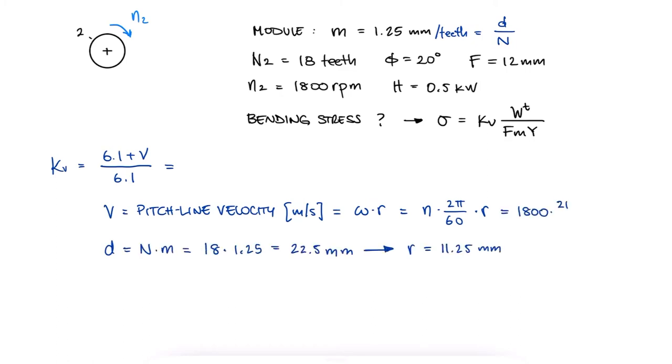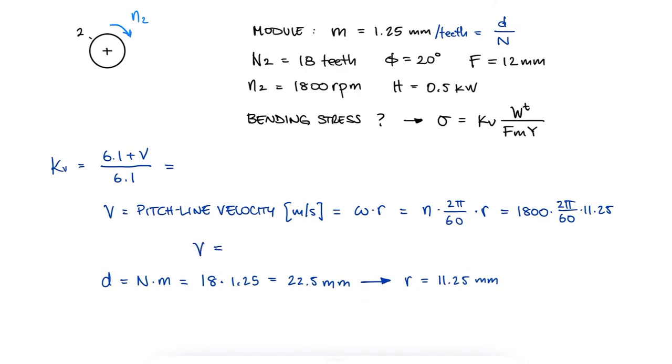With the radius and the RPM value, we find the pitch line velocity in millimeters per second, which divided by 1000 gives us the velocity in meters per second. With this value, we find the first one of the variables that we need, kV.